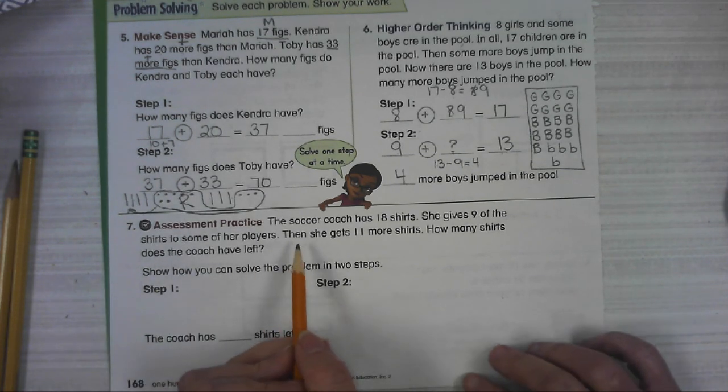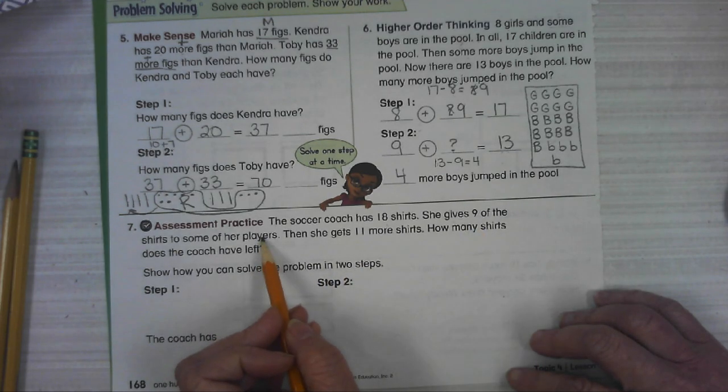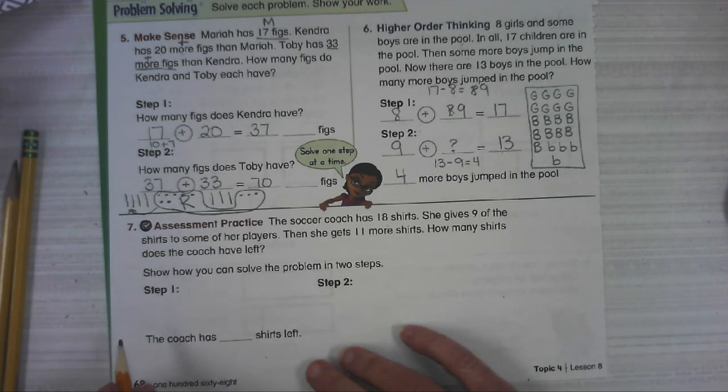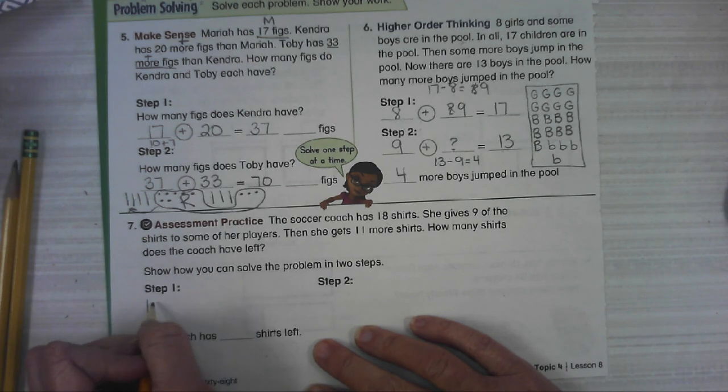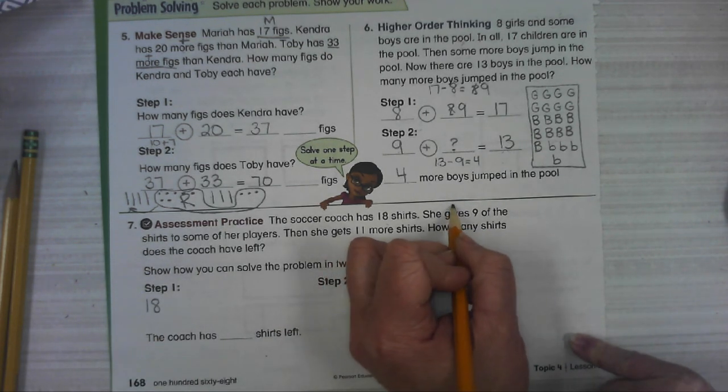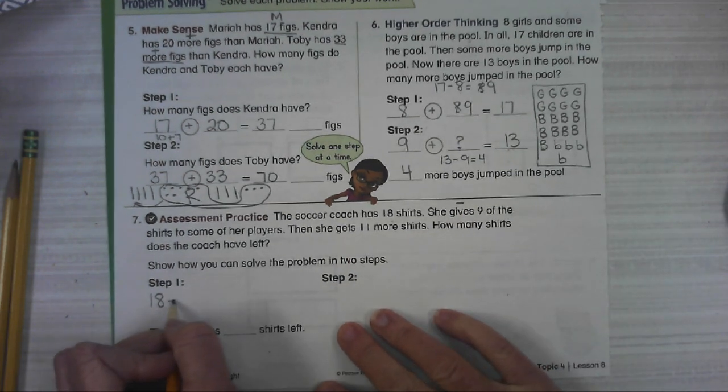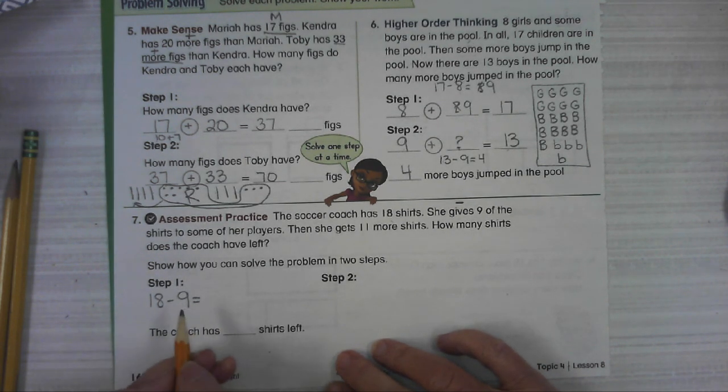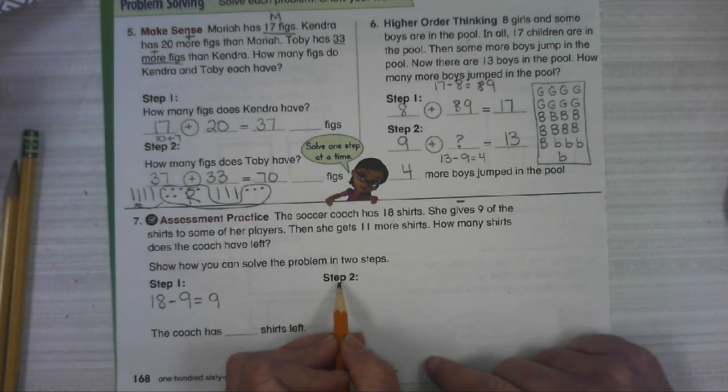Number seven, the soccer coach has 18 shirts. She gives nine of the shirts to some of her players. Then she gets 11 more shirts. How many shirts does the coach have left? Well, let's break it down into steps. She has 18 shirts. She gives nine of the shirts for players, giving. That means you're getting rid of some of them. So that's going to be a subtraction problem. What is 18 minus nine? Do we know our doubles facts? 18 minus nine equals nine. All right.